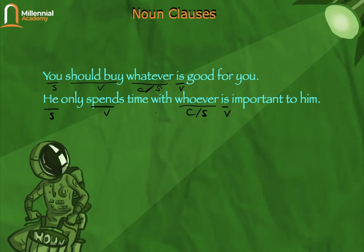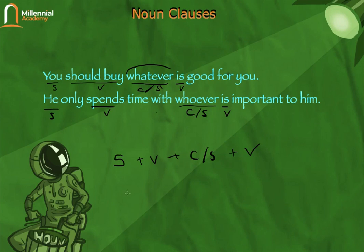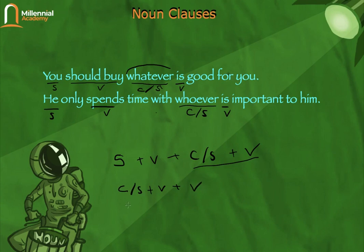So to summarize: when the noun clause functions as an object and the connector is also a subject, the formula is: subject + verb + [connector/subject] + verb. When the noun clause functions as a subject, the formula becomes: [connector/subject] + verb + verb.